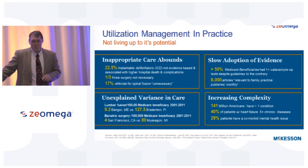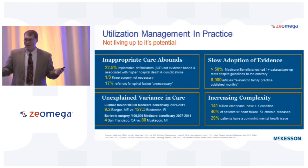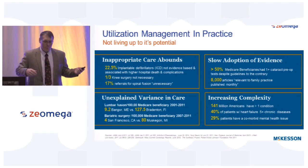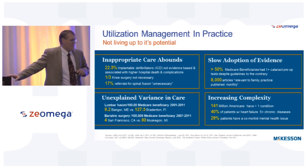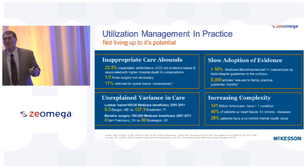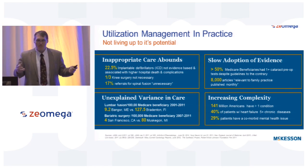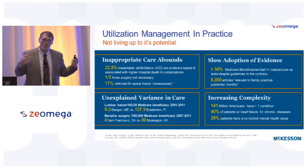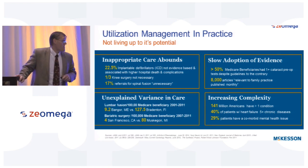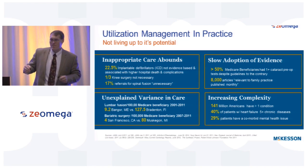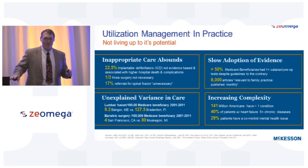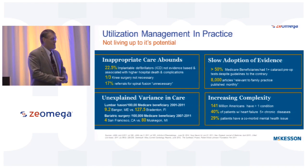And then the complexity: 141 million Americans have greater than one condition — COPD, diabetes. 40% of patients with heart failure have five or more chronic conditions — the sickest of the sick. 29% of our patients will have a comorbid mental health issue. So how do we use the evidence and clinical decision support to make sure what's happening is appropriate? And every year we're adding about 3.5 million people to the Medicare population — we call it the silver swarm. All of these people are getting older and that population is the hardest to serve.